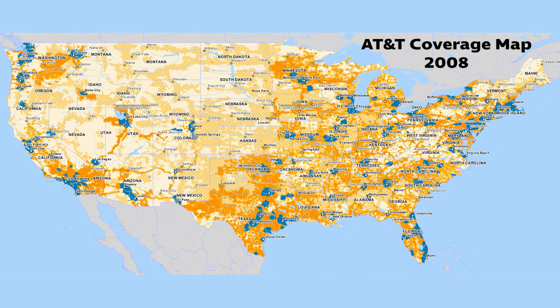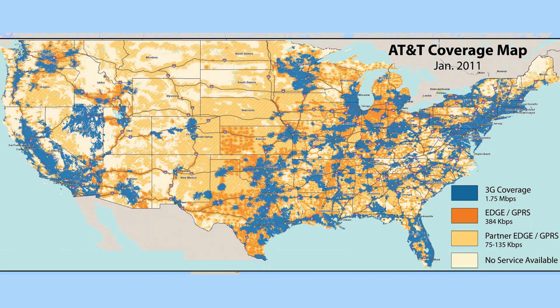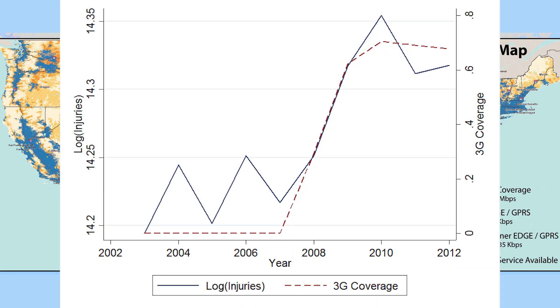If we get enough of these areas, on average there shouldn't be much difference between them — especially in terms of what affects childhood injuries. So if we see childhood injuries go up in 3G areas, we can attribute that increase to the iPhone. And there's good supportive evidence: if you look at the spread of 3G throughout the United States, you'll see it closely matches the increase in child injuries reported by the Wall Street Journal.